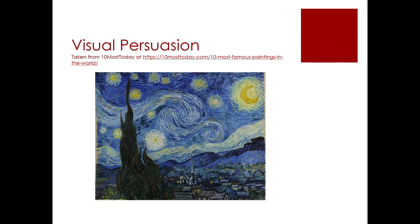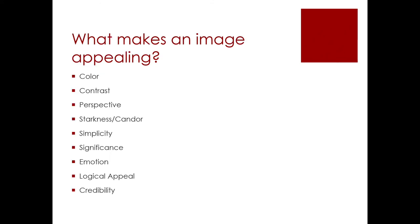What makes these images appealing? In many cases it's the color, contrast, and perspectives. In the Babe Ruth photo, the starkness and candor. In the Vietnam photo, the emotions attached and the credibility — we see the stark reality of war. Visual persuasion is so very important. We are persuaded by visual elements every day of our lives — when you see a billboard, a magazine ad, something on the internet.